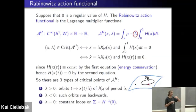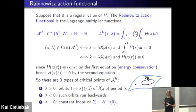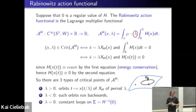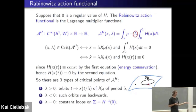Something rather interesting happens: these critical point pairs (x, λ) have λ being any real number. If λ is positive, we can rescale x in time and get a periodic orbit of period λ on the energy level zero. But this Rabinowitz action functional gives more solutions: there are also solutions with negative λ, which you can interpret as Hamiltonian orbits run backwards with negative period. And if λ equals zero, then ẋ = 0, meaning x is constant — and wherever that constant lives, it must lie on σ, so all points on σ give constant critical points as well.